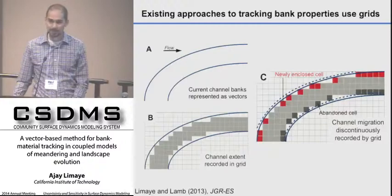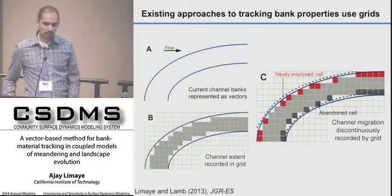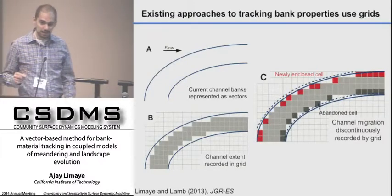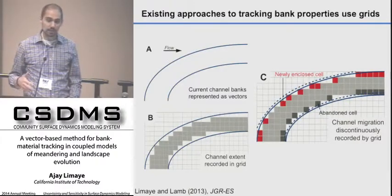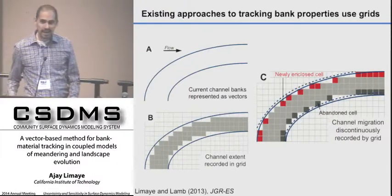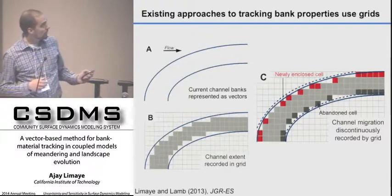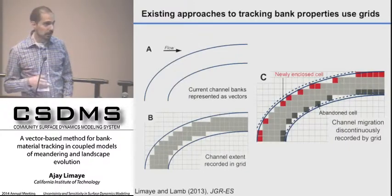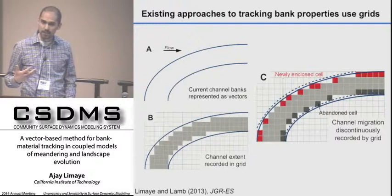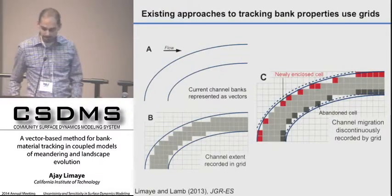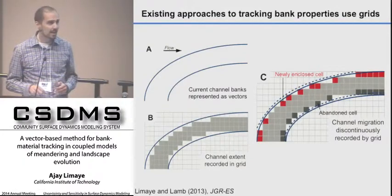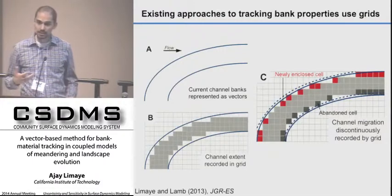In the context of numerical modeling, tracking bank material properties is a key phenomenon we want to incorporate. Existing approaches commonly use grids. The channel banks are represented using vectors, but the actual channel extent is mapped onto a static grid to give memory of where the channel has been. As the channel evolves forward in time, certain parts of the landscape are recorded as newly eroded — but because this mapping is done in a discrete fashion, there's a discontinuous mapping of the erosion.